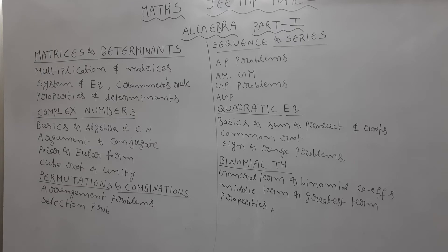Next up, see the next chapter complex numbers. In this, topics are basics and algebra of complex numbers, argument and conjugate, and polar and Euler form. Next up, cube root and unity. You have to more concentrate in these topics.